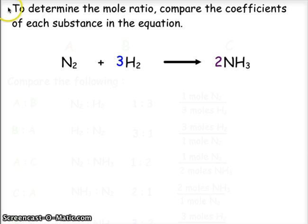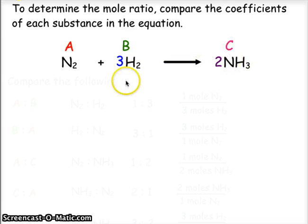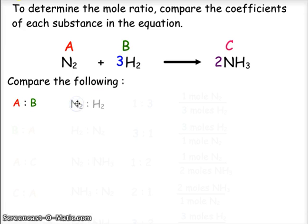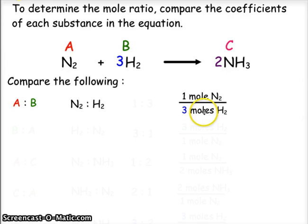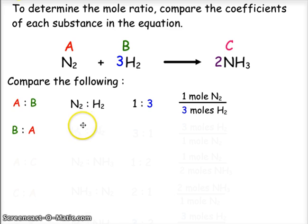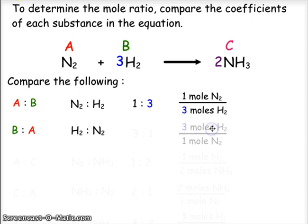Here we have the balanced chemical equation again, and we'll label nitrogen as A, hydrogen as B, and ammonia as C. Comparing A to B — nitrogen to hydrogen — gives us one mole of nitrogen for every three moles of hydrogen, a one-to-three ratio. Comparing B to A — hydrogen to nitrogen — gives us three moles of hydrogen to one mole of nitrogen, a three-to-one ratio.